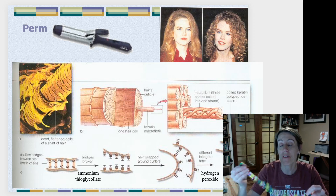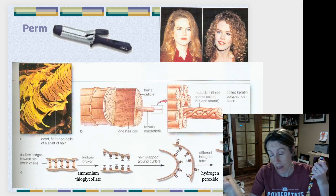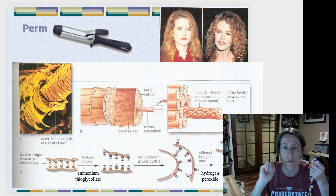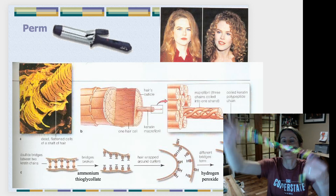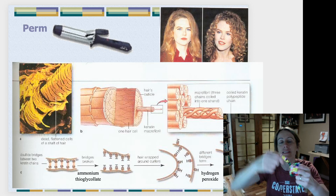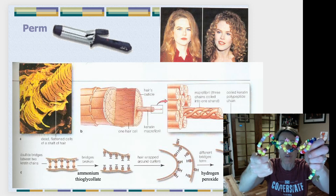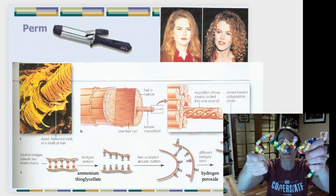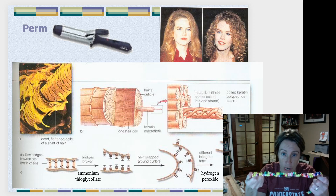What you've done with heat is temporarily disrupted some of the R group interactions, like the ionic bonds and the hydrogen bonds. But that much heat probably didn't break the covalent bonds of the disulfide bridges. So you were able to take your straight hair and temporarily denature it into a different shape — a curl. But because the disulfide bridges didn't break, over the day your curly hair will gradually fall back into its straight shape.